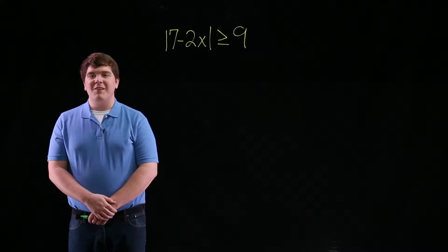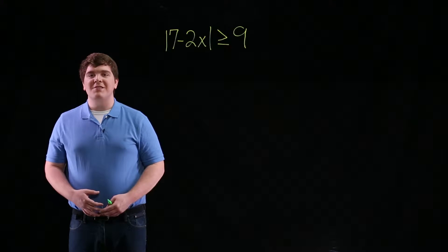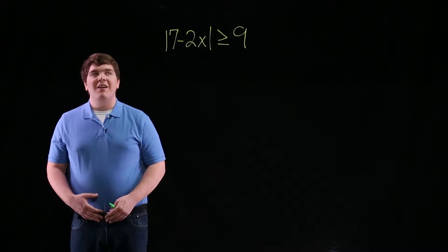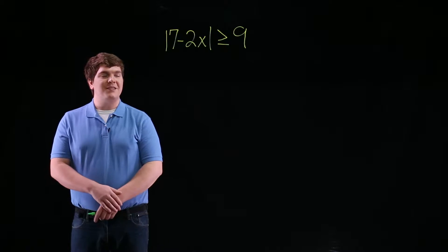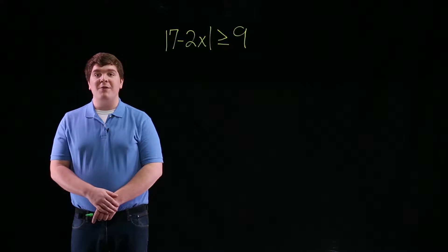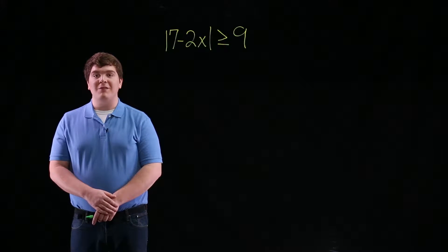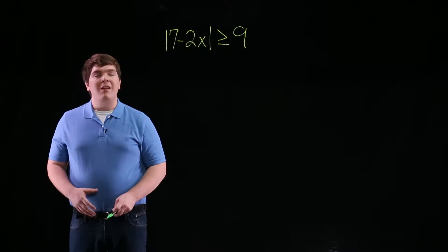Hi, I'm Gabe. For this problem, we're asked to solve the equation: the absolute value of 7 minus 2x is greater than or equal to 9.